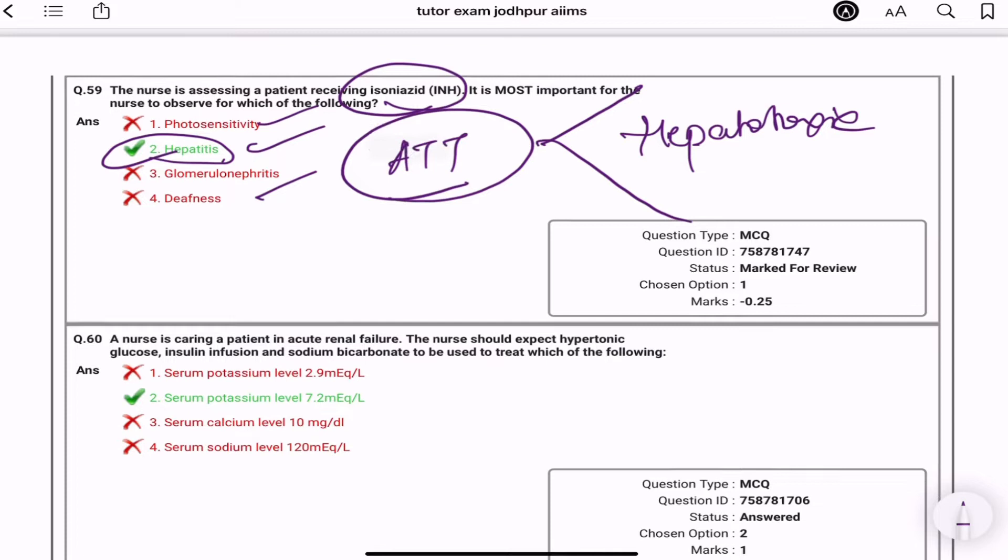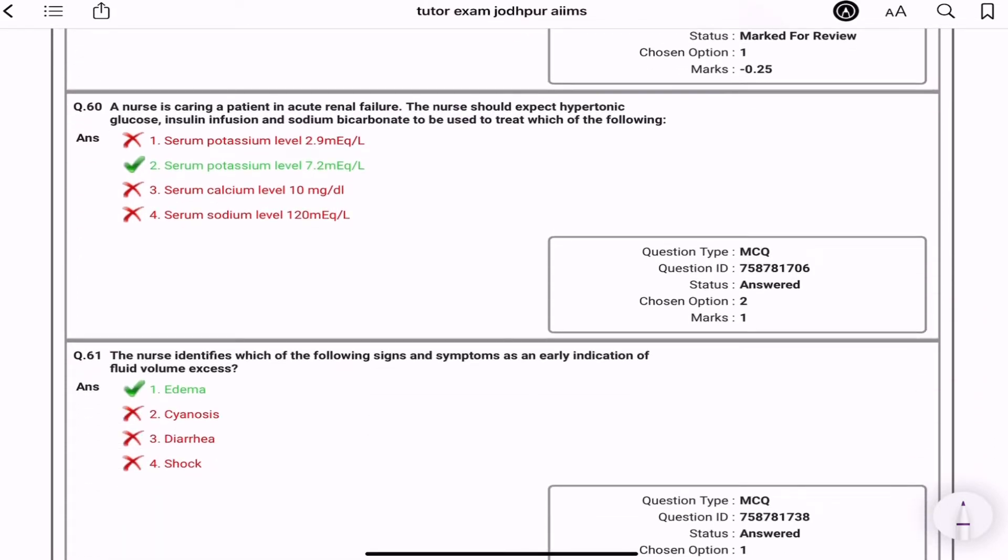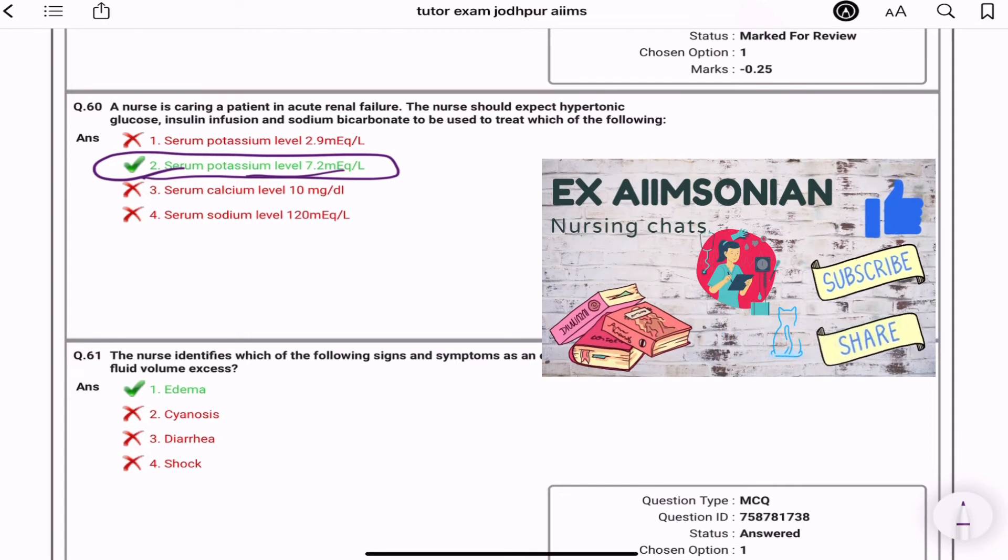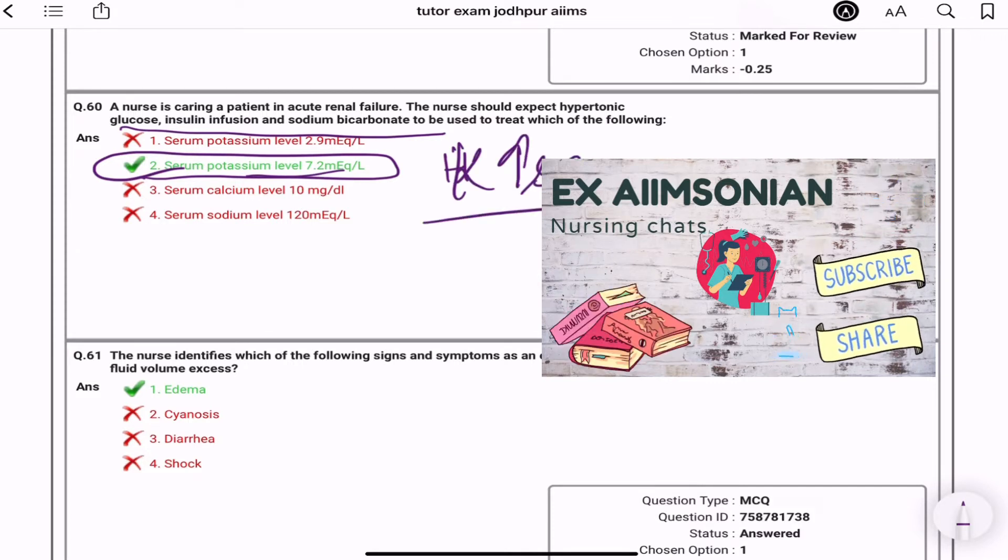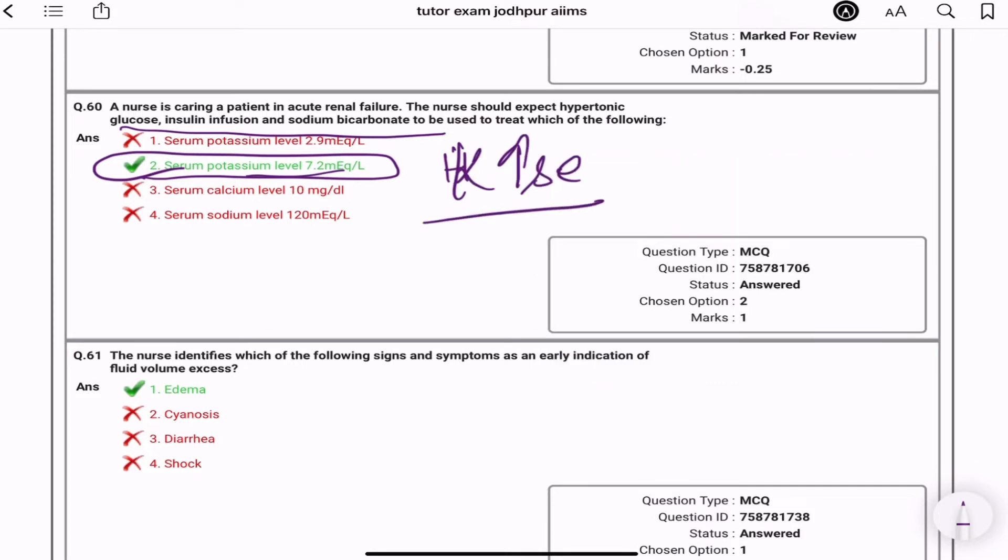A nurse is caring for a patient in acute renal failure. The nurse should expect hypertonic glucose insulin infusion, sodium bicarbonate is used to treat which of the following? Serum potassium level. Yeh na aapka aap ye sab kyun de reho? Kyunki aapne kya karna hai? Potassium, potassium aapka rise kar gaya hai, hyperkalemia ho gaya hai. Hyperkalemia ke liye aap kya kar sakti ho? Glucose with insulin infusion, then sodium bicarbonate aap de sakti ho. Or kya de sakti ho? Kayexalate, ek drug hai. Toh aap de sakti ho K-bind aap de sakti ho kya orally agar patient tolerate kar sakti ho.